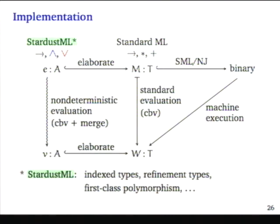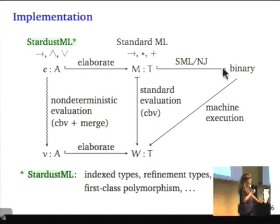I'm not going to say too much about the current implementation here. The source language has intersections and unions and a bunch of other things, some which are left over from the type refinements stage of it. You elaborate to a target program M, which is actually standard ML. Compile that with your favorite SML compiler. Assuming that's correct, that will give you something that corresponds to running M, which should correspond to one of the evaluations of e.